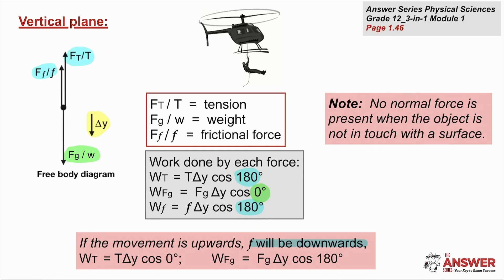If the object is moving upwards, then the frictional force will end up being downwards, which means the work done by the frictional force will remain negative. However, this time it is the tension's turn to act in a positive direction — the tension will now do positive work because the angle between the two vectors is 0 degrees. The gravitational force, still downwards, is now at 180 degrees to delta y, and so the gravitational force will do negative work.